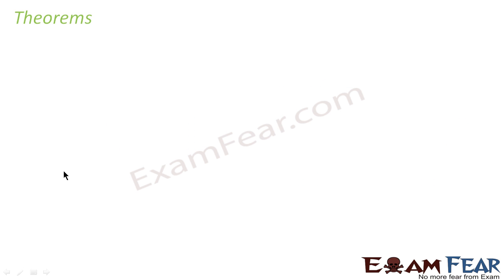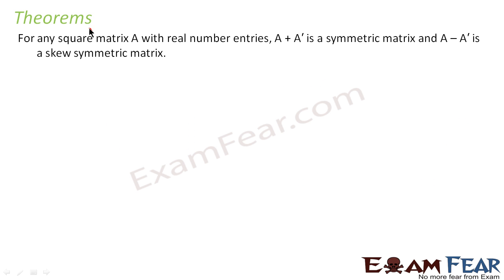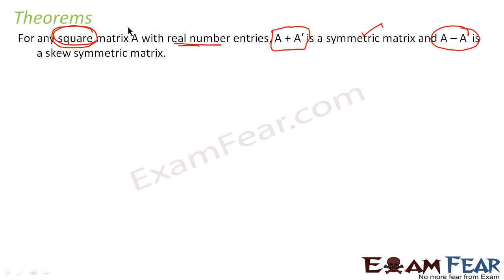Let's take some theorems. This theorem is true for any square matrix with real number entries. A plus A dash — that is A plus transpose of A — is always a symmetric matrix, and A minus A dash is always a skew-symmetric matrix. That is, any square matrix can be written in the form of a symmetric and a skew-symmetric matrix.